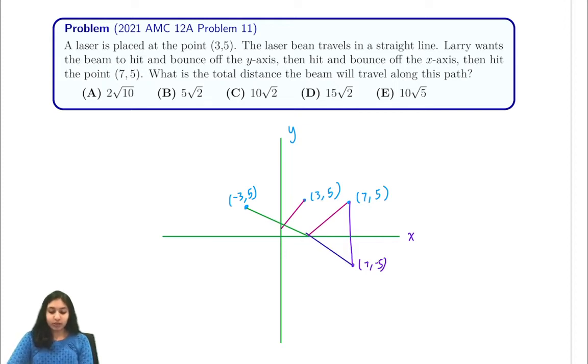Now we have one distance calculation and it's between the point (-3,5) and (7,-5). And this is a straight line because of how reflections work.